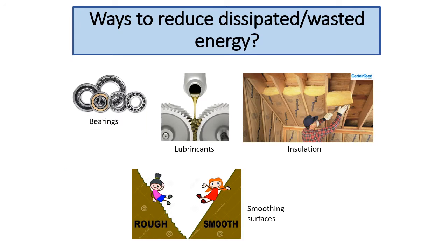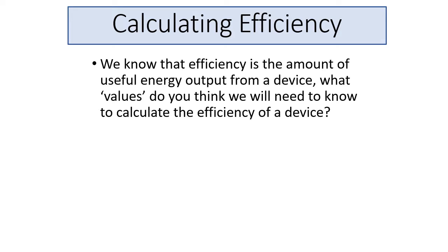There are different ways to reduce wasted energy: by using bearings to change sliding friction into rolling friction, by using lubricants between surfaces, by using insulation to reduce heat energy loss, and by using smooth surfaces to stop the dissipation of energy.